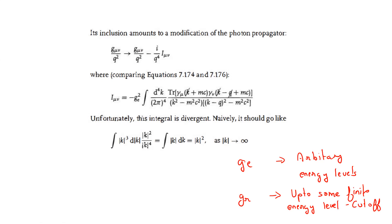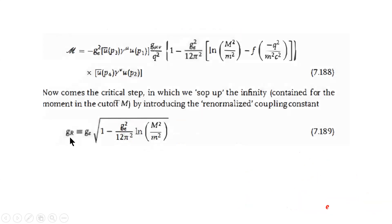So, G is your coupling constant for arbitrary energy levels. We mathematically rescale this to G_R, which is valid only up to some finite energy level — the cutoff. This is your renormalized coupling constant. When we insert this coupling constant and perform the integration, it turns out we get finite answers. This is the basic technique of renormalization.